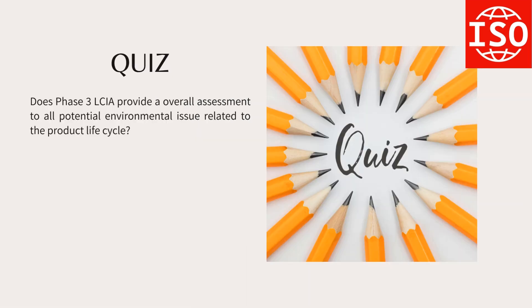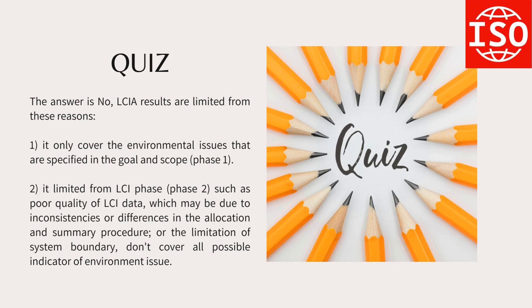Quiz: Does Phase 3, LCIA, provide an overall assessment of all potential environmental issues related to the product life cycle? The answer is no. LCIA results are limited for these reasons: (1) It only covers the environmental issues specified in the goal and scope (Phase 1). (2) It is limited by the LCI phase (Phase 2), such as poor quality of LCI data due to inconsistencies or differences in allocation and summary procedures, or limitations of the system boundary that do not cover all possible environmental indicators.